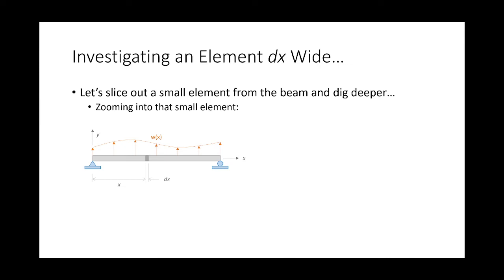To illustrate, consider a beam with a coordinate system and an upward distributed load w(x). I'm going to slice out a little element that's dx wide. Over this super tiny element, we can treat the load as constant and call it w. What I'm interested in is how much the shears and moments change over this element.